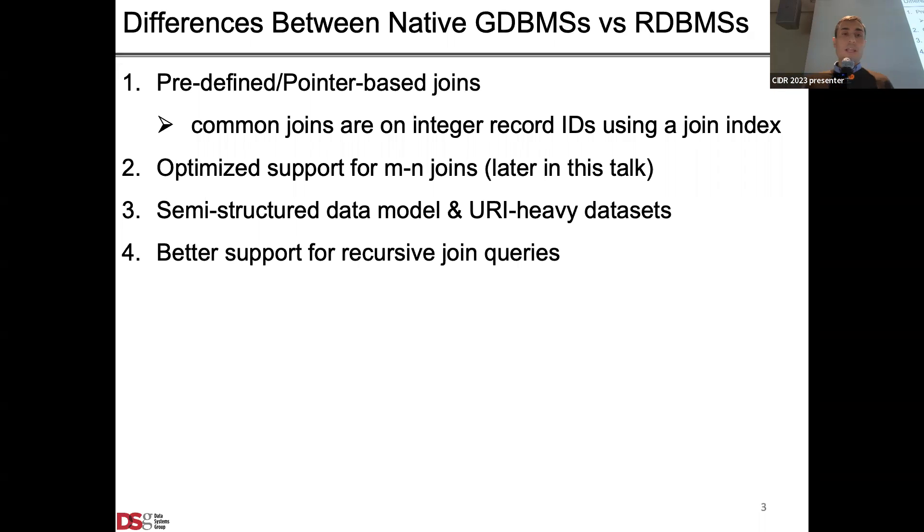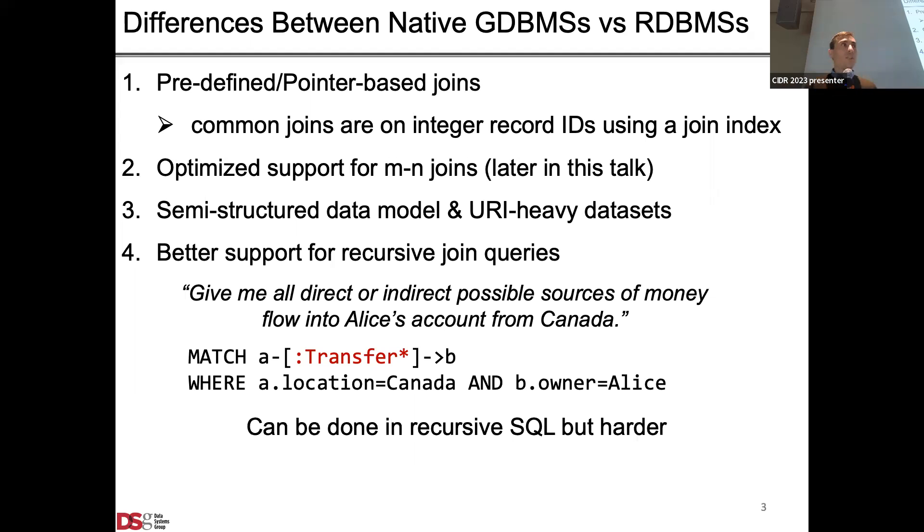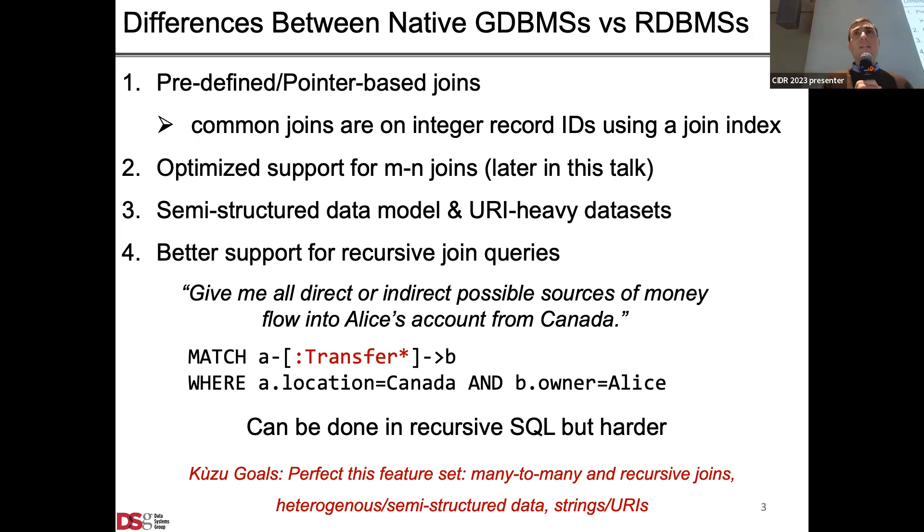I think objectively they just have better support for recursive queries both at the query language level and the system implementation. For example, if you had a financial transaction network where you had accounts and transfers between accounts and you had a question like give me all direct or indirect possible sources of money flow into Ellis's account from Canada, there's a very elegant way to express this in a language like Cypher using the Kleene star syntax. Certainly doable in SQL but objectively harder.